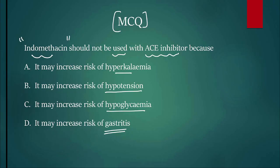What is indomethacin? It's an NSAID, a non-steroidal anti-inflammatory drug. What is an ACE inhibitor? They inhibit the enzyme ACE and their names end with 'pril'. The combination of these two drugs can increase the risk of hyperkalemia. NSAIDs can induce gastritis, but the combination with pril will not have anything to do with that.